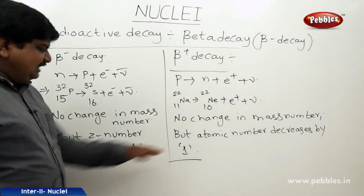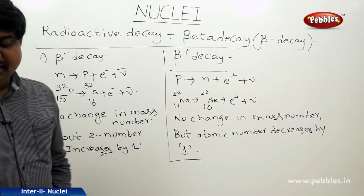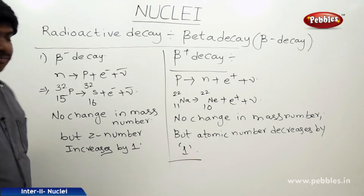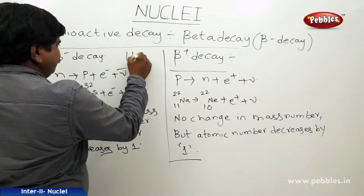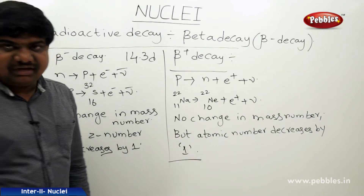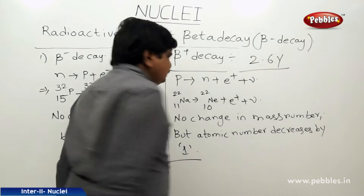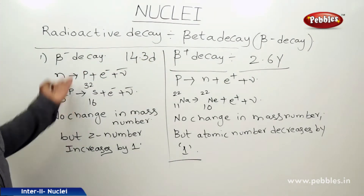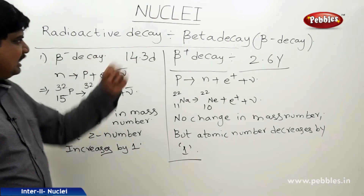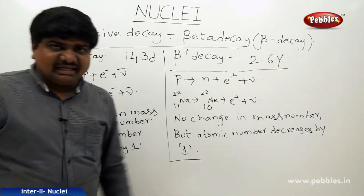Each reaction has a characteristic half-life. The beta minus decay half-life is 14.3 days, and the beta plus decay half-life is 2.6 years. These are the half-life periods of beta minus and beta plus decays. Next, we will discuss gamma decay.